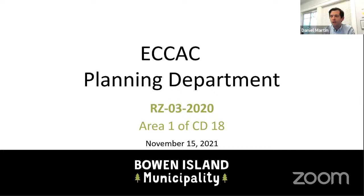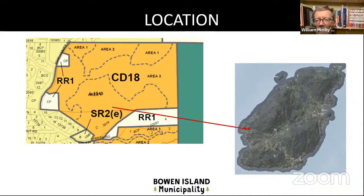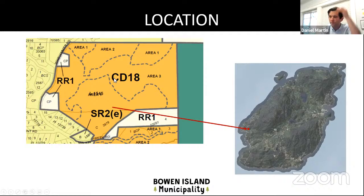I have a rezoning application referred from council. It's for Area One of CD18, known as the Arbutus Ridge comprehensive development zone on the west side of Bowen Island. There are actually three Area Ones on that map — we're looking at the one on the top left. In this CD18 zone there are three different areas making up Area One, and Area Three is essentially zoned for park and open space.